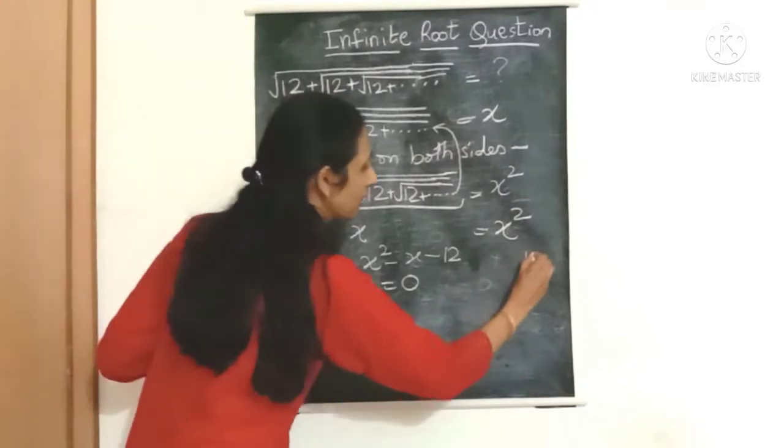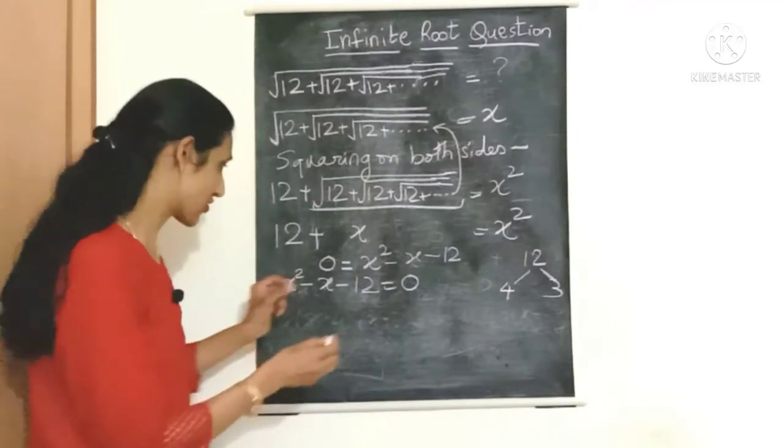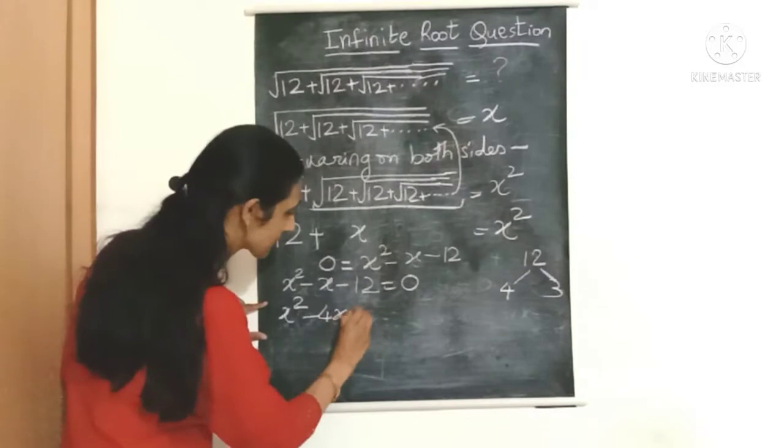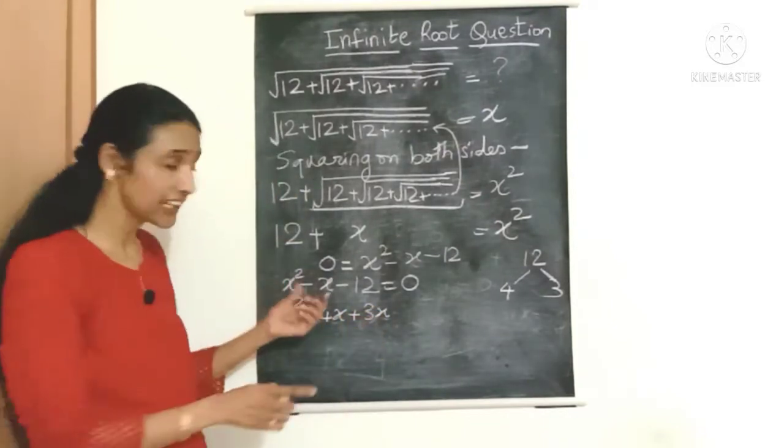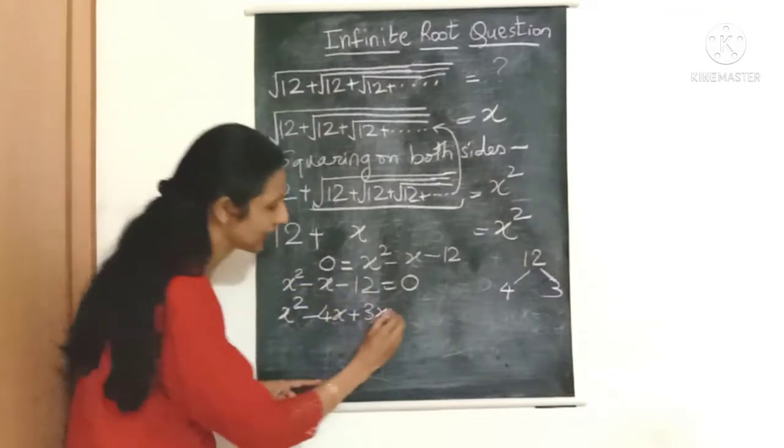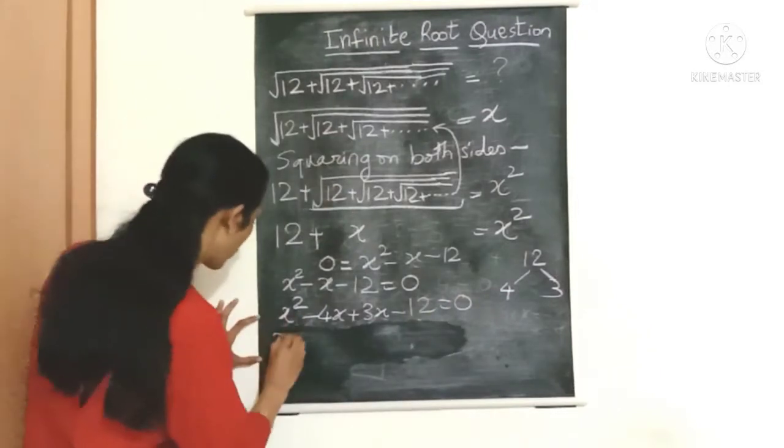Now this 12 can be easily factorized as 4 multiplied by 3. So let's do that. We can write it as x square minus, see, 4x plus 3x, so minus 4x plus 3x will give me minus x, and minus 4 into 3 will give me minus 12. So it's very easy.